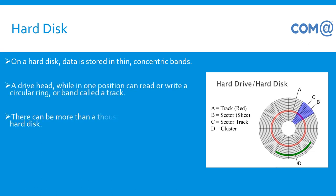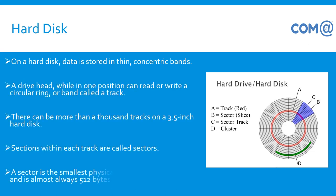On a hard disk, data is stored in thin concentric bands. A drive head, while in one position, can read or write a circular ring or band called a track. There can be more than a thousand tracks in a 3.5-inch hard disk. Sections within each track are called sectors — a sector is the smallest physical storage unit on a disk, and is almost 512 bytes in size.